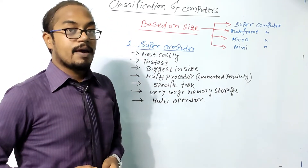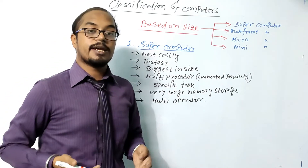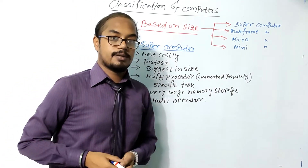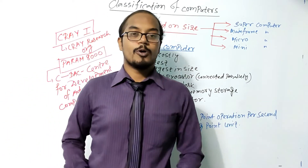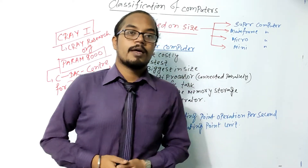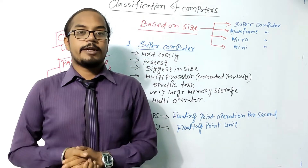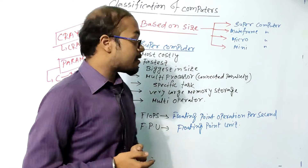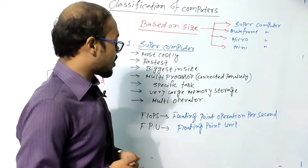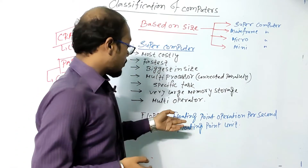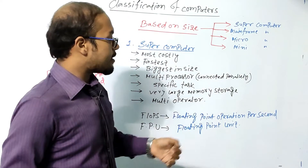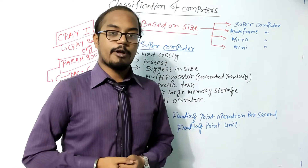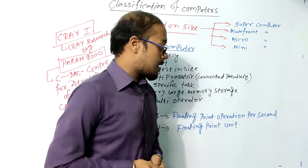Many users can be connected to a supercomputer at once. The frequency unit used to measure the speed of a supercomputer is FLOPS — Floating Point Operations Per Second. This can be petaflops, teraflops, and so on.